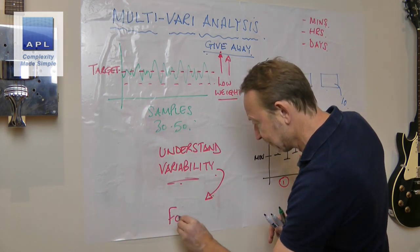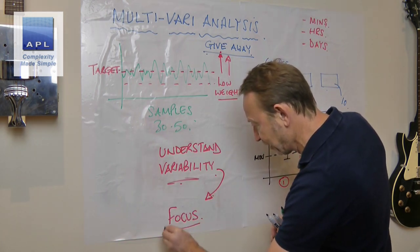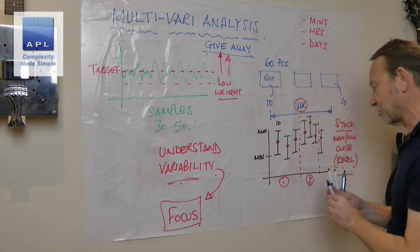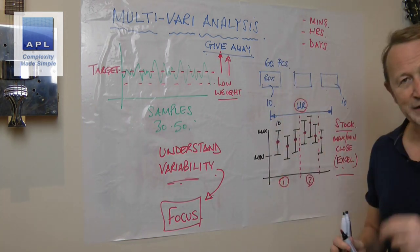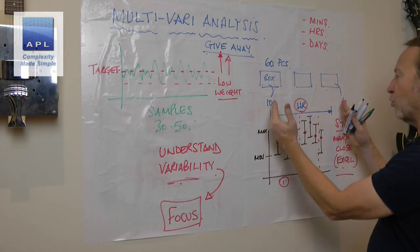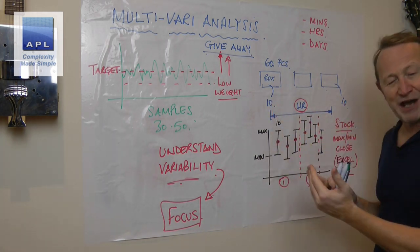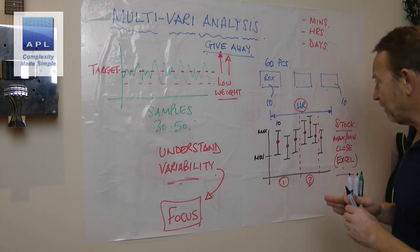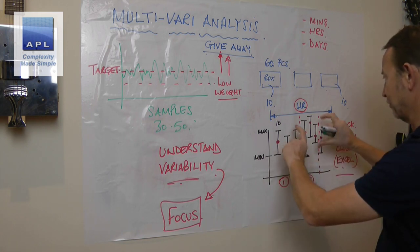It's just constantly spitting out different weights, one behind the other, completely different to one another. Now that will tell me where to go focus my attention. Once we understand where the variability is coming from, we can focus our attention on the variables that cause that. So within-box variability, focus your attention there.